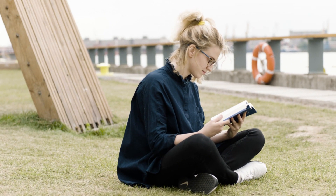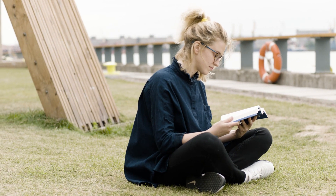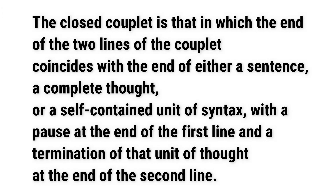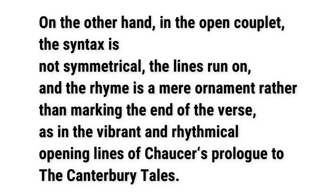Its usage became widespread and popular in the 17th and 18th centuries, at which time it became known as heroic couplets. There are two distinct types of heroic couplets: the close and the open. The close couplet is that in which the end of the two lines coincides with the end of either a sentence, a complete thought, or a self-contained unit of syntax, with a pause at the end of the first line and a termination of that unit of thought at the end of the second line. In the open couplet, the syntax is not symmetrical; the lines run on, and the rhyme is a main ornament rather than marking the end of the verse.